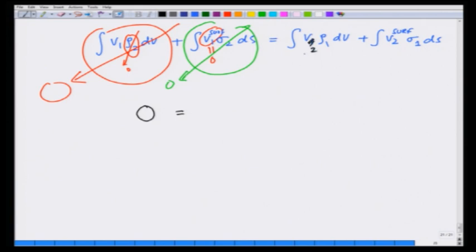This should have been v 2. This is equal to v 2, which is v (d minus x) divided by d, rho 1, which is q delta of (r minus x naught x) d v, plus...